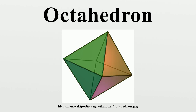The following polyhedra are combinatorially equivalent to the regular octahedron. They all have six vertices, eight triangular faces, and twelve edges. Triangular antiprisms: two faces are equilateral, lie on parallel planes, and have a common axis of symmetry; the other six triangles are isosceles. Tetragonal bipyramids: at least one of the equatorial quadrilaterals lies on a plane. The regular octahedron is a special case in which all three quadrilaterals are planar squares.